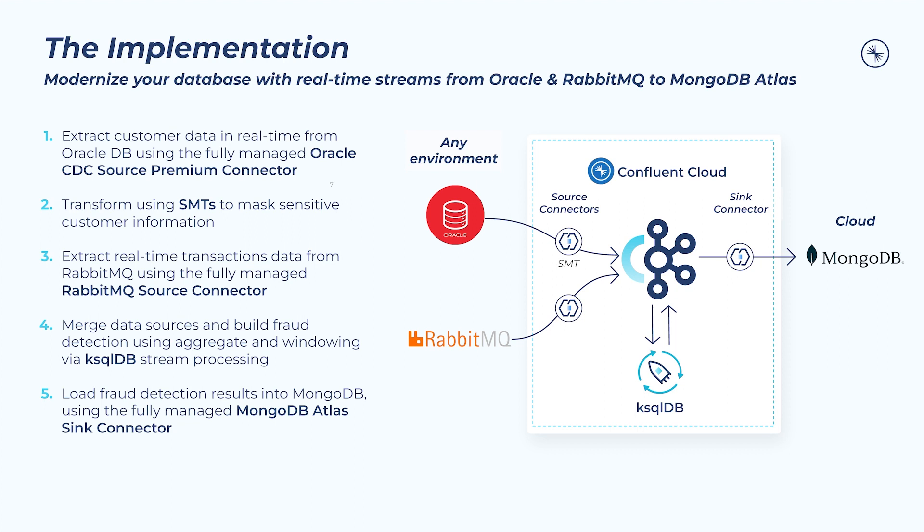Once all of our data is in Confluent Cloud, we'll merge the two data sources with ksqlDB, generating a unified view of the customer and their credit card activity. To help build out our real-time fraud detection use case, we'll leverage ksqlDB aggregates and windowing to create a customer list with potentially stolen credit cards. Finally, we'll load the results into MongoDB Atlas using the fully managed MongoDB Atlas Sink Connector, where the team could do further analysis.